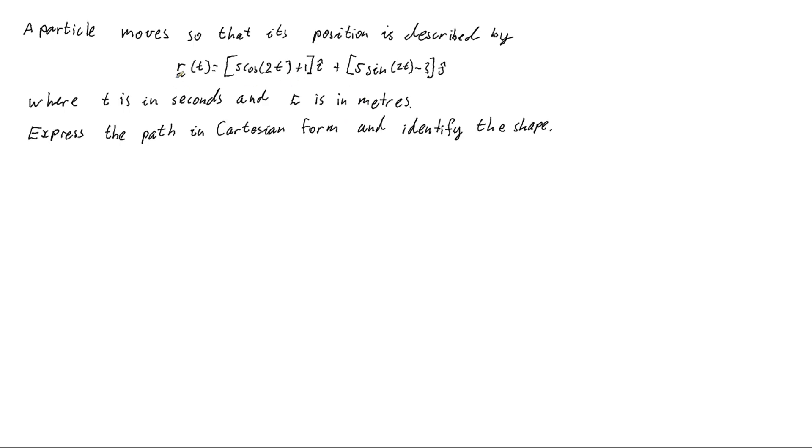Hi, in this video I'm looking at this problem here, which has got a particle moving with its position described by this vector equation, 5 cos 2t plus 1i plus 5 sin 2t minus 3j, where time the t parameter is in seconds and the distance represented by the position vector is in meters. And we're going to express the path that this particle is following in Cartesian form and then identify the shape that that path is.